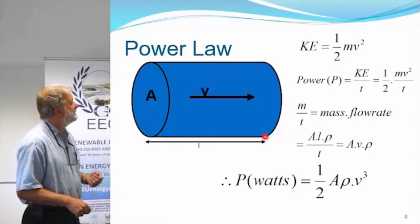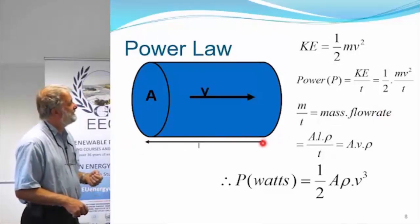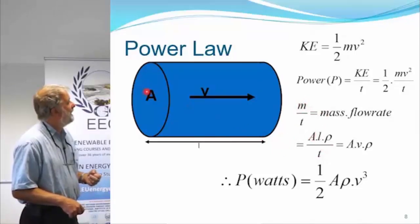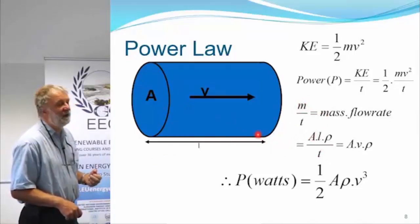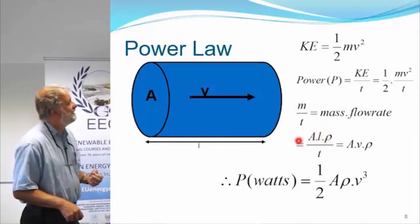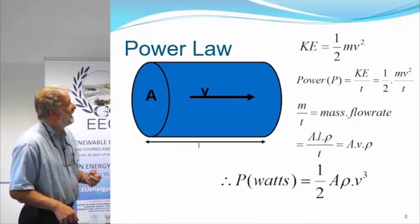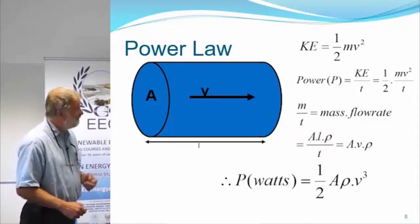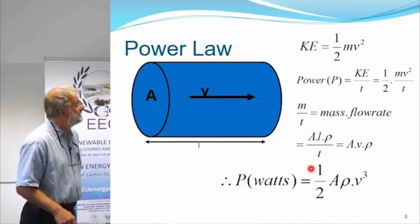And that's going to travel distance L in one second. So I can replace this arrangement with A times L, that's the volume, times by the density. That's going to give me the mass. So now I've got AL rho, and L over t is velocity.